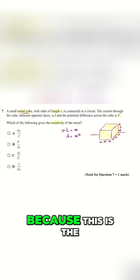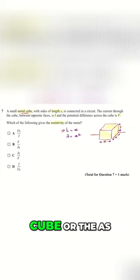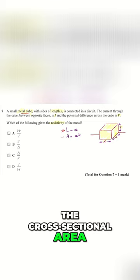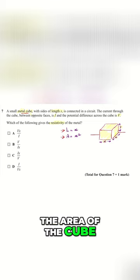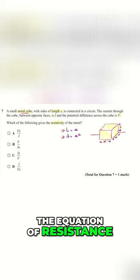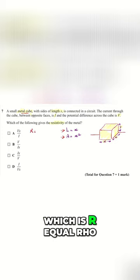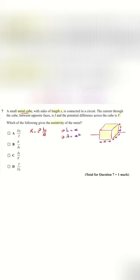The cross-sectional area which is x square, the area of the cube. The equation of resistance which is R equals rho L over A.